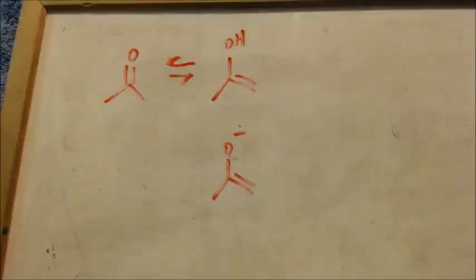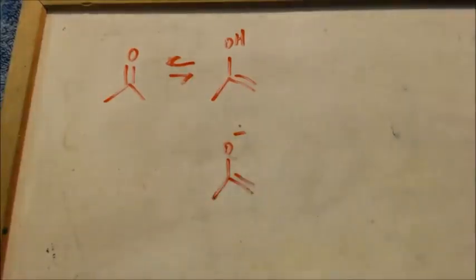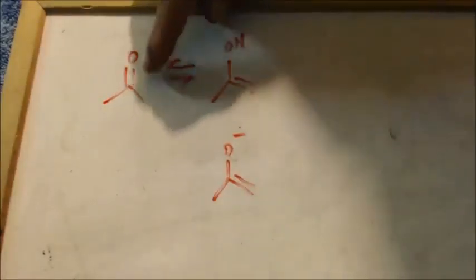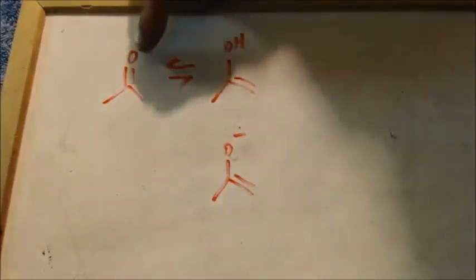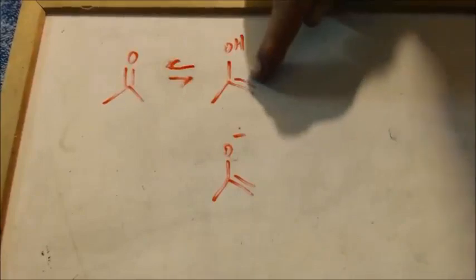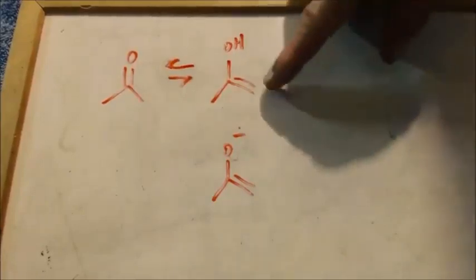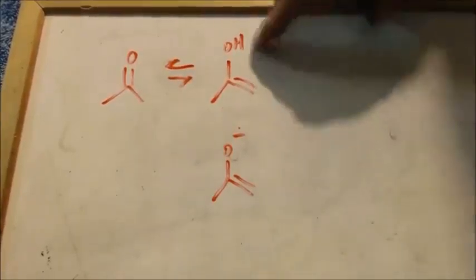Ketones and aldehydes can do a little resonance thing and they form an enol — enol tautomerization. Basically, your hydrogen from down here, your acidic hydrogen, jumps up onto the oxygen lone pairs, and this double bond falls down here. See how the double bond fell? And the hydrogen came from down here.